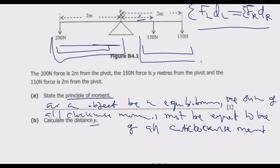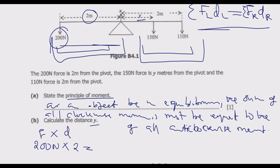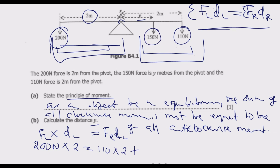The moment to the left-hand side will be 200 Newtons multiplied by 2 meters. So left equals F multiplied by distance left, equals F multiplied by distance right. On the right side we have 110 multiplied by 2 meters, plus 150 Newtons multiplied by Y meters, which gives us 150Y. At this point we solve for Y.